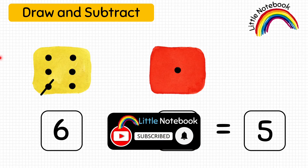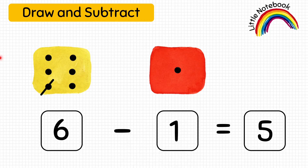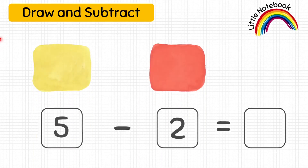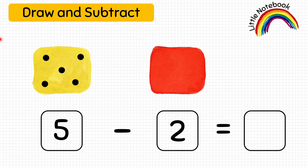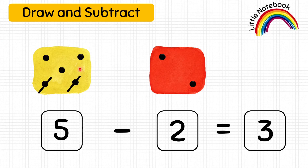If you are enjoying watching videos on our channel, do like, share, and subscribe to Little Notebook. Next question: five minus two equals how much? The kid draws five dots in the yellow dice and two dots in the red dice. To subtract, let's cross two dots — one, two. We are left with one, two, three dots — so the answer is three. Five minus two equals three.